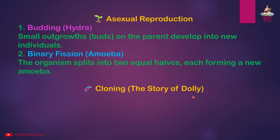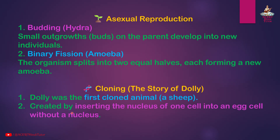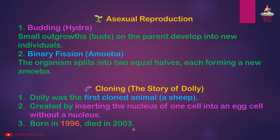Cloning — the story of Dolly: Dolly was the first cloned animal, a sheep. She was created by inserting the nucleus of one cell into an egg cell without a nucleus. Dolly was born in 1996 and died in 2003.